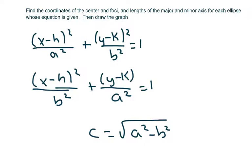Hi everyone, we're going to finish up ellipses by finding important information like the center, the foci, and the lengths of the major and minor axes, and drawing the graphs. These are where the centers are not at zero, unlike the previous video where the centers were at zero. This is getting a little harder.